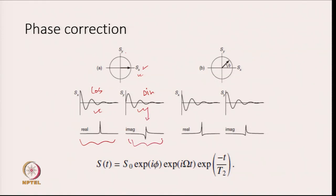But suppose our 90-degree pulse is not exactly 90 degrees. Then what we get is a signal which has a phase with the X and Y axis. In that case, your signal will not look exactly like the pure cosine or sine forms — it will have a slight phase shift, and your real part will look distorted, as will your imaginary part.